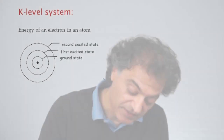If this electron were a classical system, then it could store one of k pieces of information, which we might denote by 0, 1 through k minus 1.